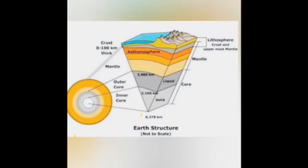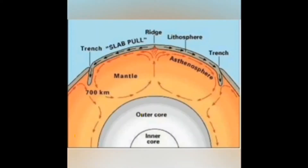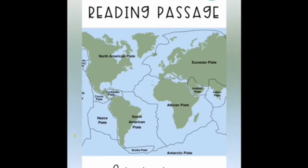The lithosphere is the Earth's crust and upper part of the mantle. The lithosphere consists of solid material from the surface of the planet down, and is also referred to as the Earth's crust. The lithosphere is constantly changing because of the shift in tectonic plates. The plate movements are very slow and we do not feel the change unless there is an earthquake or a volcanic eruption.